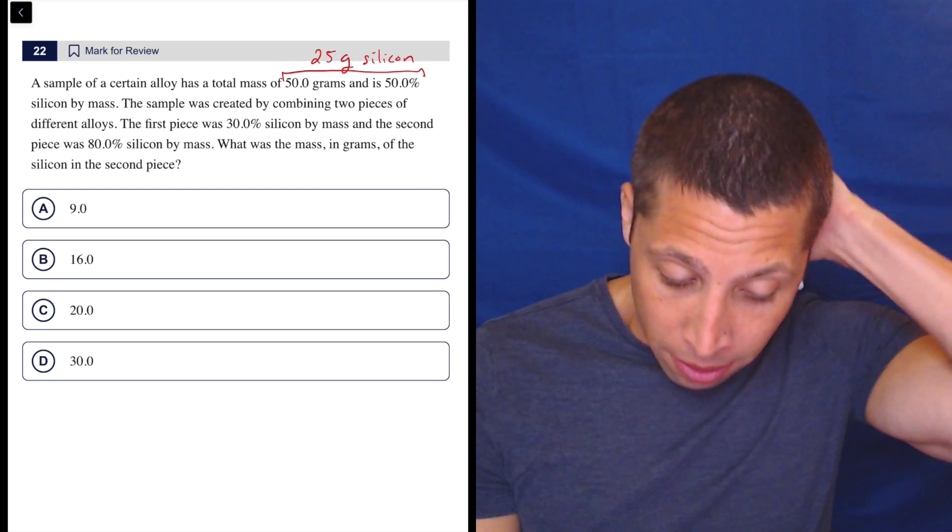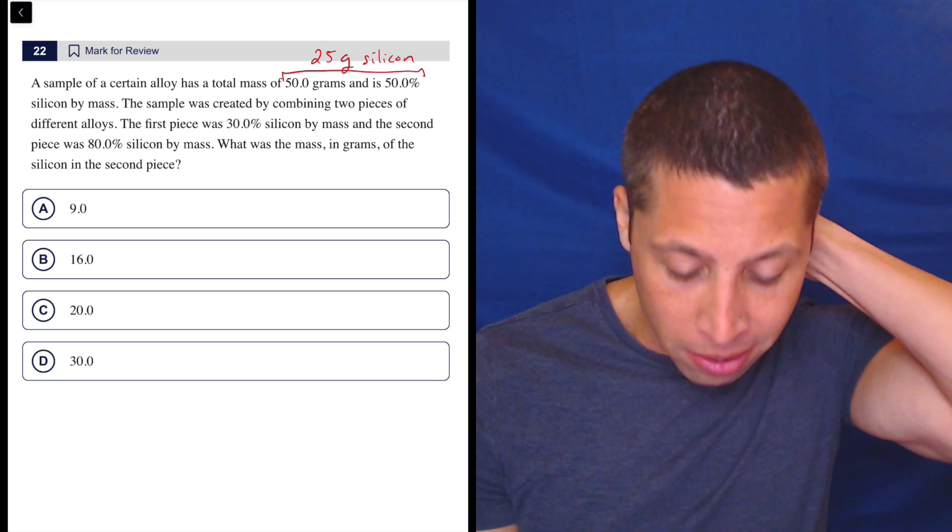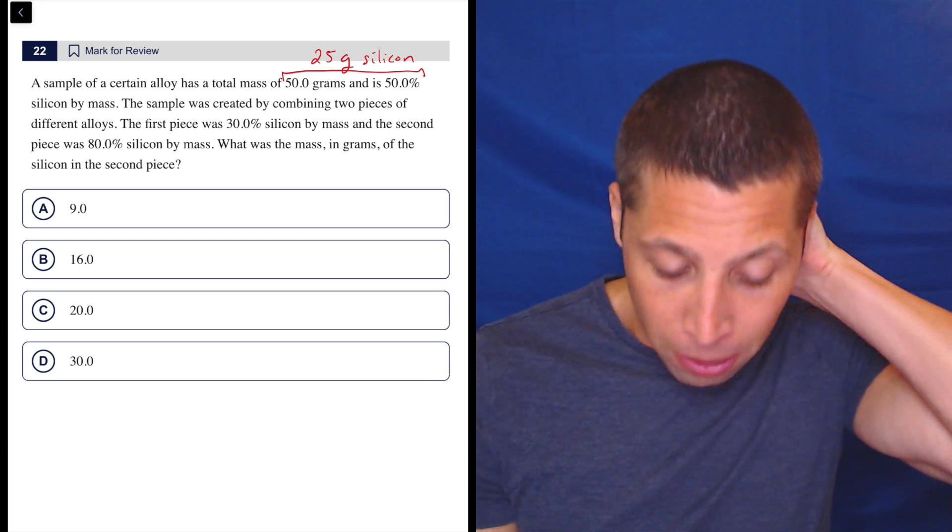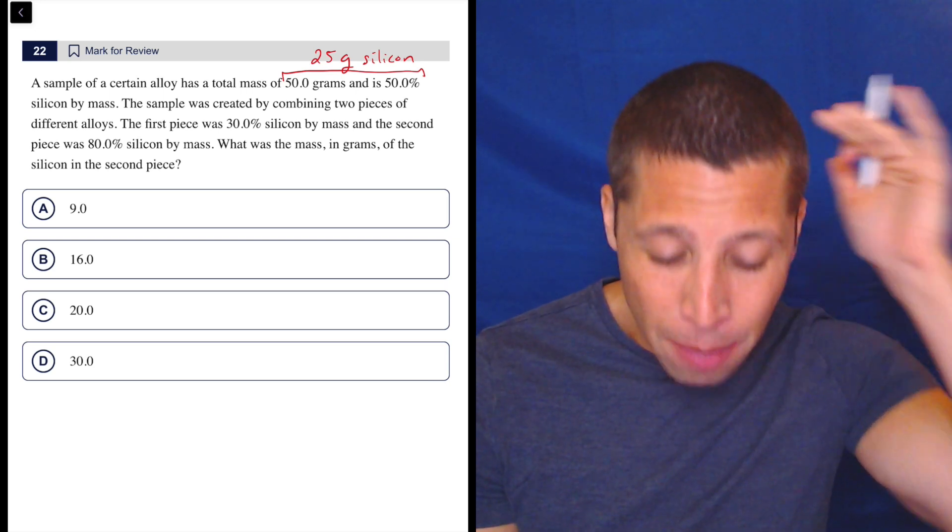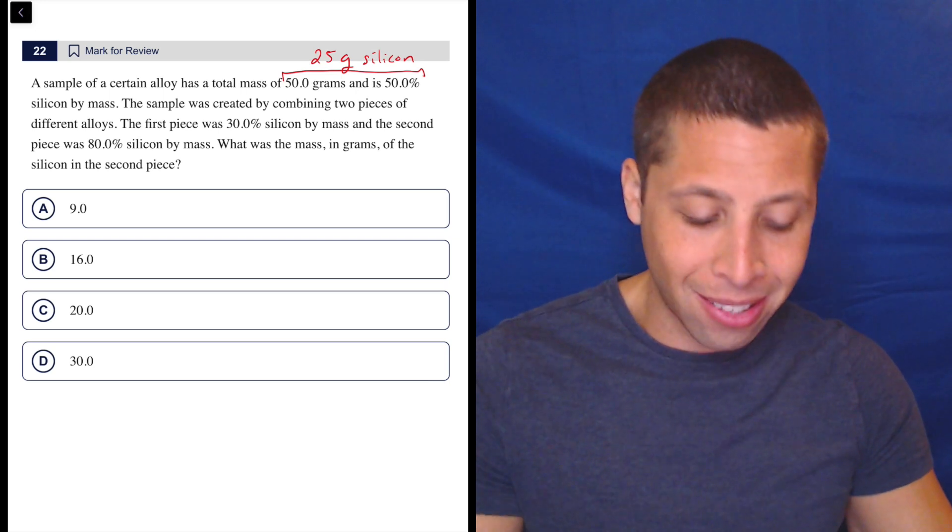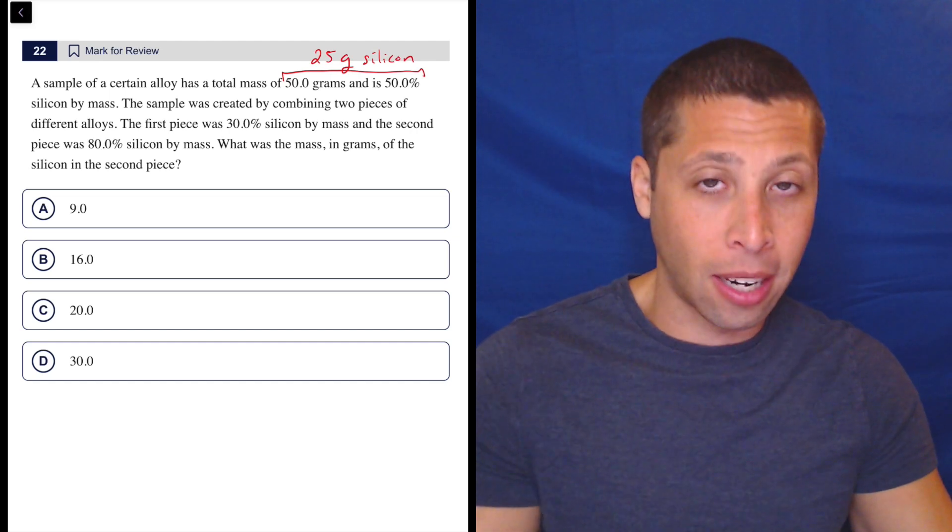Now we can continue. The sample was created by combining two pieces of different alloys. The first piece was 30% silicon by mass and the second piece was 80% silicon by mass. What was the mass in grams of the silicon in the second piece?